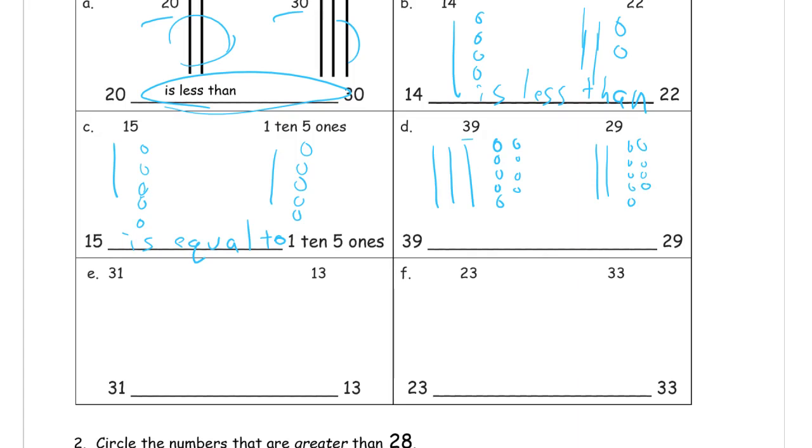Now you can see both these numbers have the same amount of ones. They both have nine ones. But 39 has more tens, so it's greater. So 39 is greater than 29.